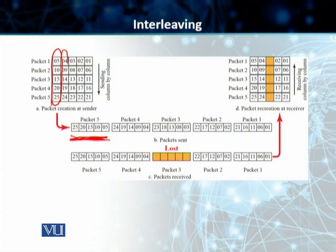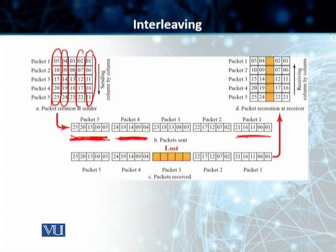This is our second packet, and we are sending it horizontally. Starting from packet number one, this is the sending column by column. This is packet number one, packet number two, packet number three, and so on.